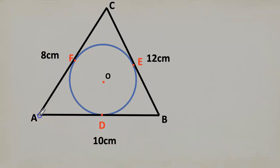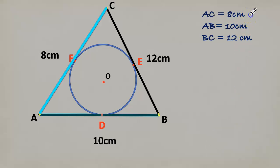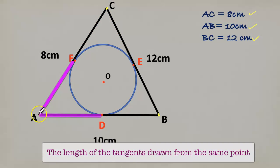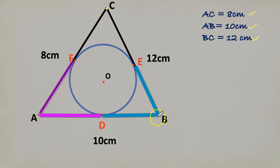Here in triangle ABC, the points of contact are D, E, and F. Length of AB, BC, and AC are given: AC is 8 cm, AB is 10 cm, and BC is 12 cm. Let us take CF as X. CF and CE are equal, both are from the same point. AF and AD are equal. BE and BD are equal.